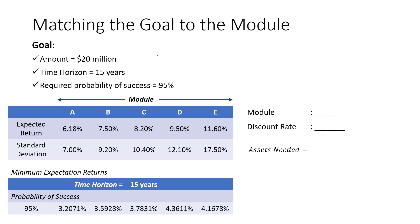Finally, let's say a client has a goal that in 15 years time, the client wants to have a 95% probability that they will have $20 million for a certain purpose — it could be for donation, charity purposes, or leaving it to the next generation. The advisor has proposed five modules to the client, and will choose one of these modules for the client to allocate their assets. We have the expected return and standard deviation for each module, and the minimum expectation returns adjusted for a period of 15 years with a 95% probability of success. We previously calculated the minimum expectation returns for module C, where the expected return is 8.2% and the standard deviation is 10.4%.